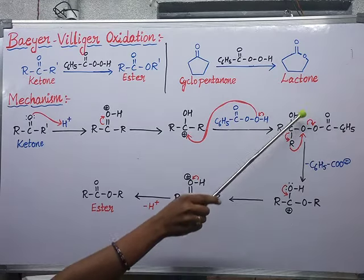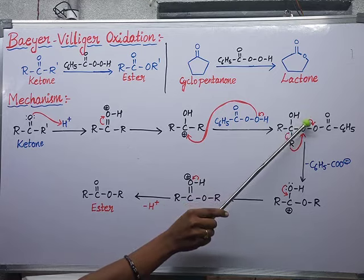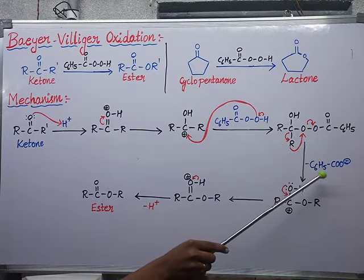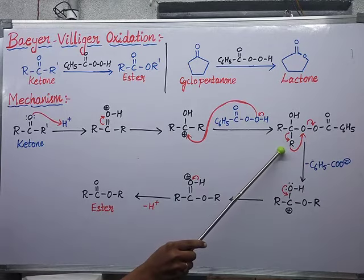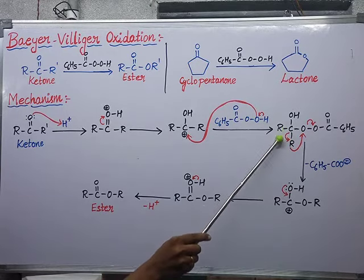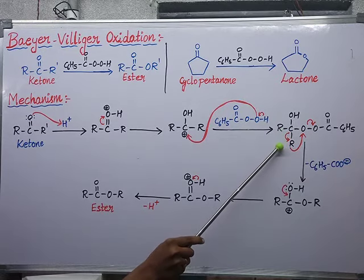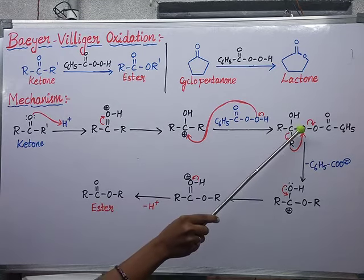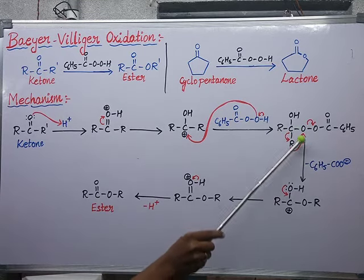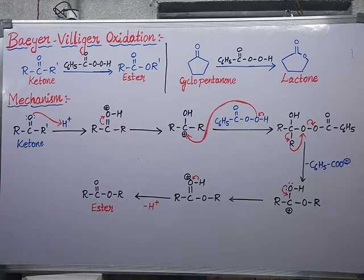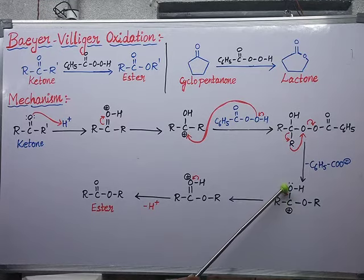Next I am breaking this O-O linkage and shifting this bond towards that side. So the C₆H₅COO⁻ part comes out. Then I am breaking this bond and shifting the bond electrons towards R. R gets a negative charge. This negatively charged R is attacking on this oxygen and forming a new O-O bond. This carbon is getting a positive charge.